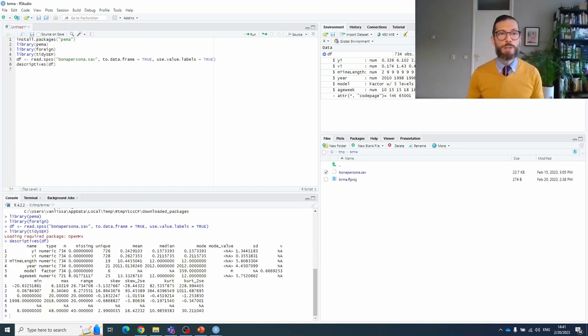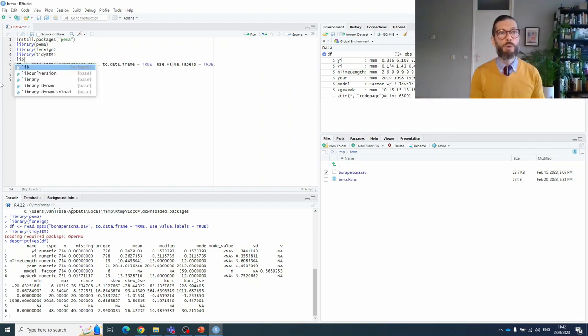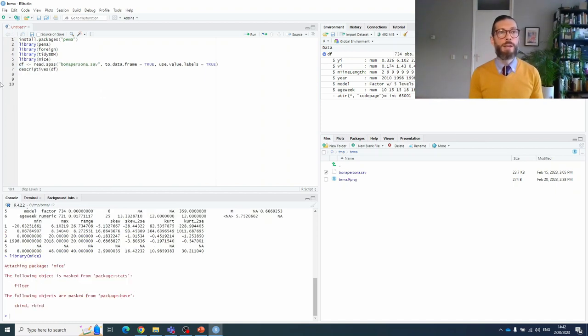Now I will load one more package, which is the tidySEM package because it has a good descriptives function. If we run that function, we see that there is a certain percentage of missing values. We have 721 observations on age and weeks, but we have 734 on all of the other variables. Now the nice thing is that PEMA can handle multiply imputed data. So we're going to load the mice package to impute the data. And we create a new object called dfimp for the imputed data.